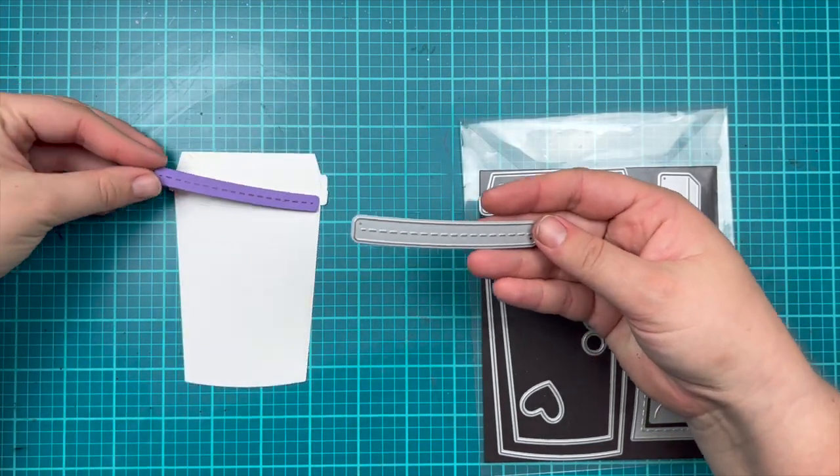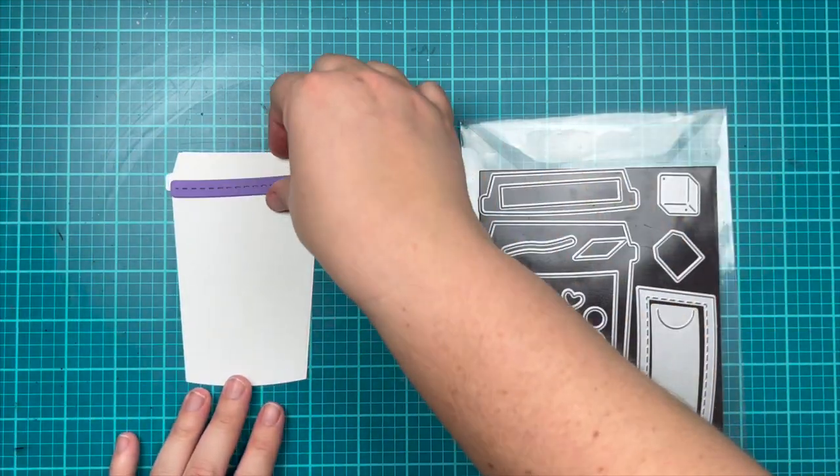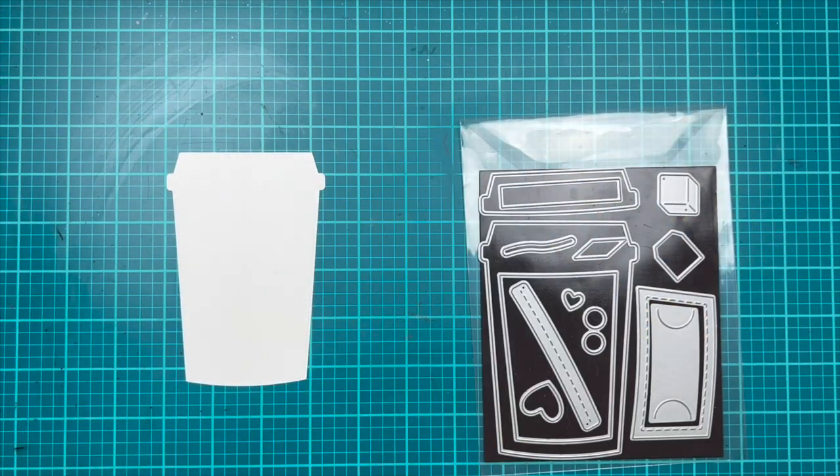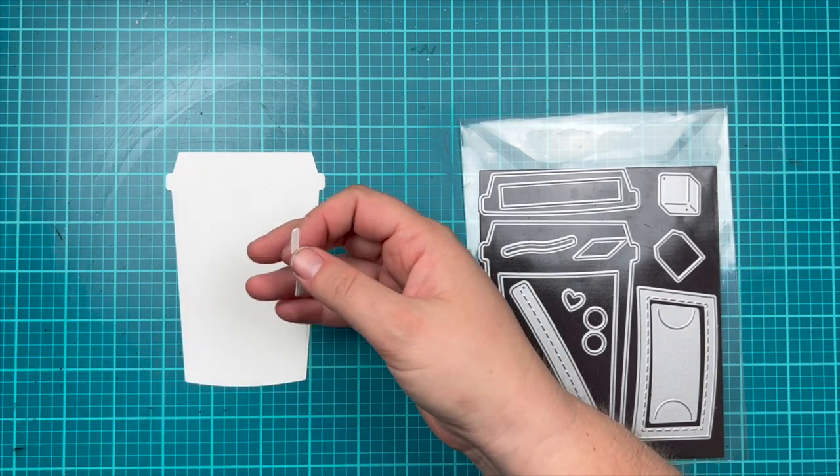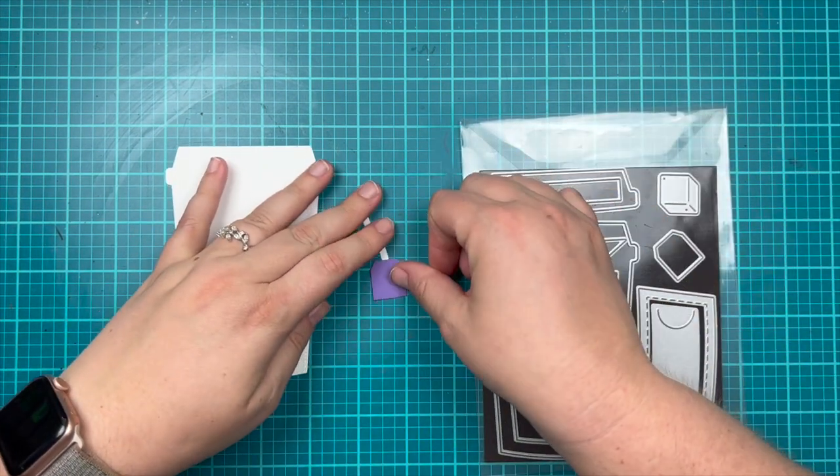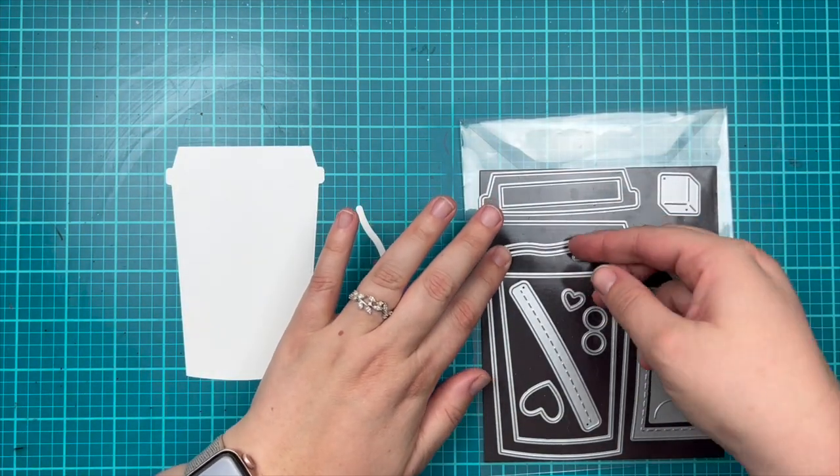You can trim off that top part of the lid and put it on the edge of a cup. Some cups might have a different color on the part where you would sip out of, so that's an option as well.